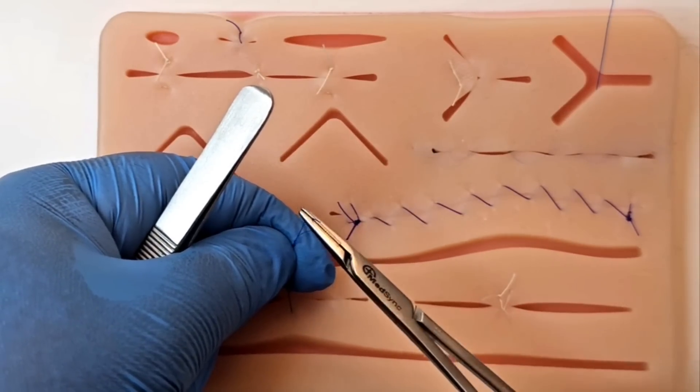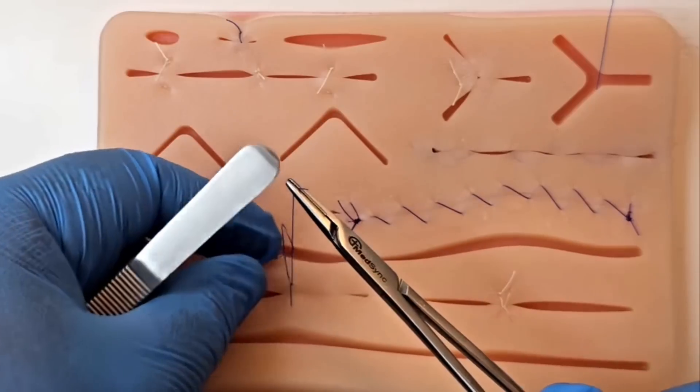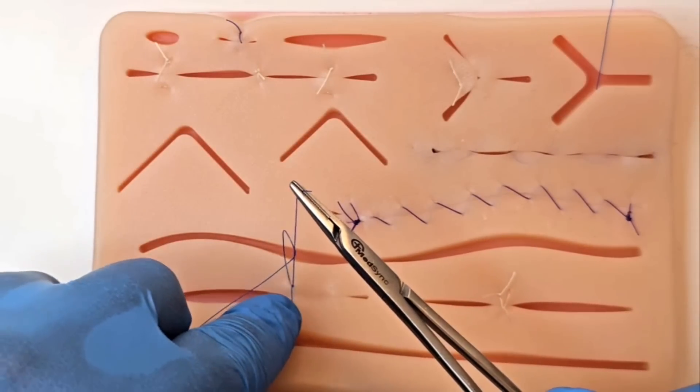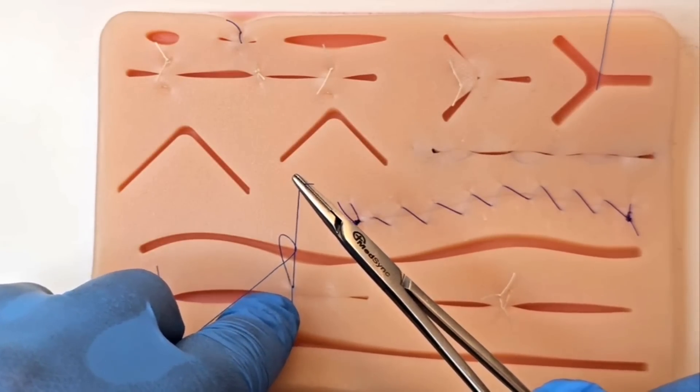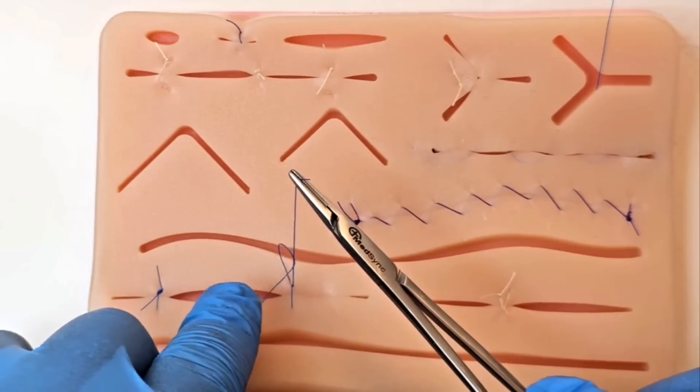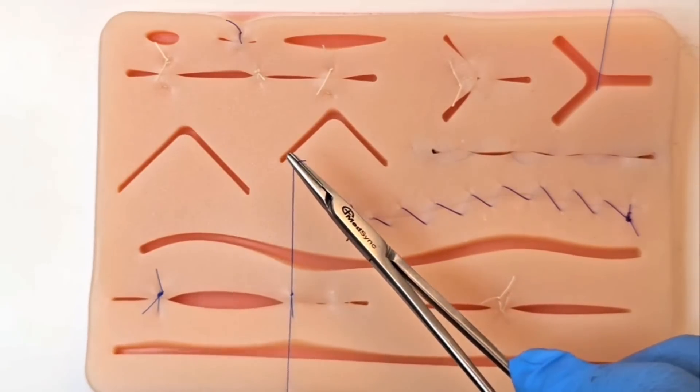Now take the tension onto the short suture, ensuring that your knot is still approximated. When you're happy, slide the long suture down and secure your knot.